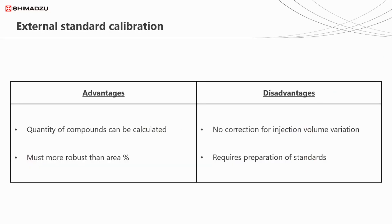This method is much more robust than area percent and is widely accepted as a reliable method for quantitation — we can determine exact quantities of compounds within the sample. But the method isn't completely without flaw: this version doesn't account for instrument variation, such as small discrepancies in injection volume. It's also more labour intensive, as it requires the preparation of calibration standards. You'd usually need a minimum of three concentrations to be confident your line of best fit is accurate, and ideally around five.